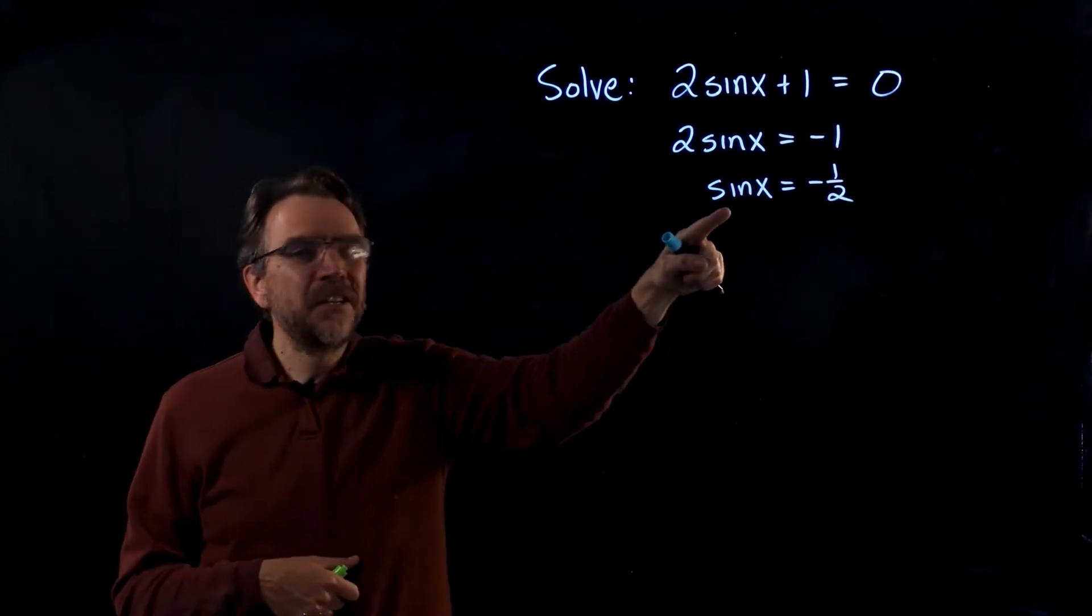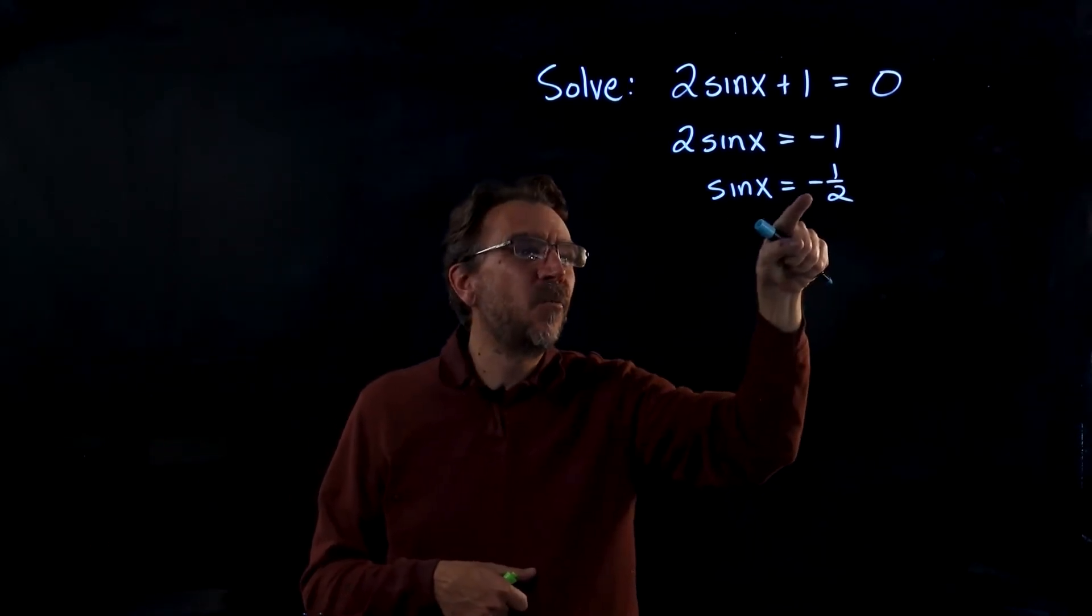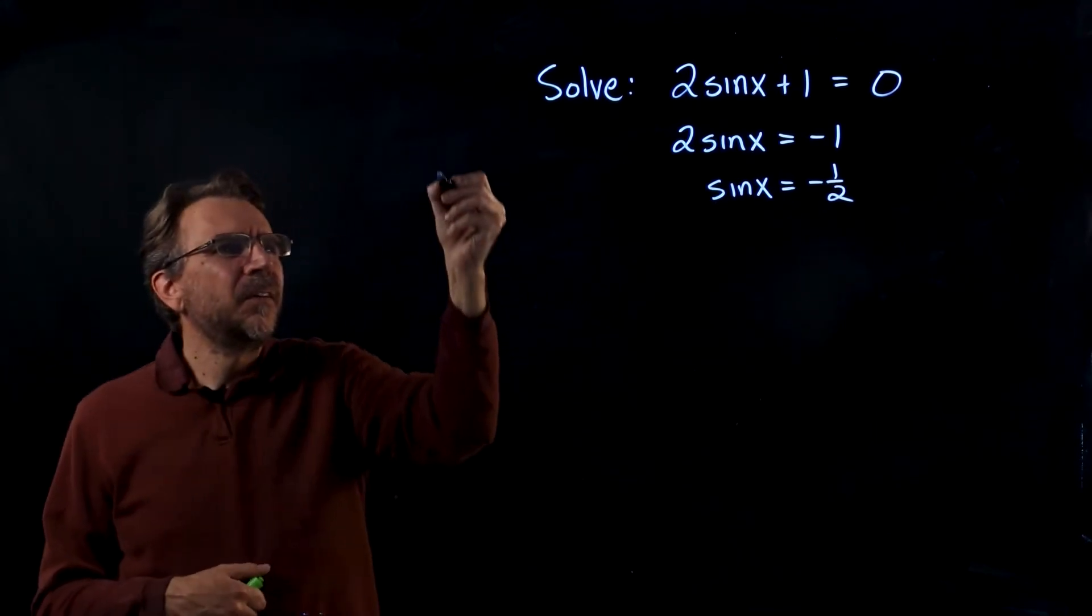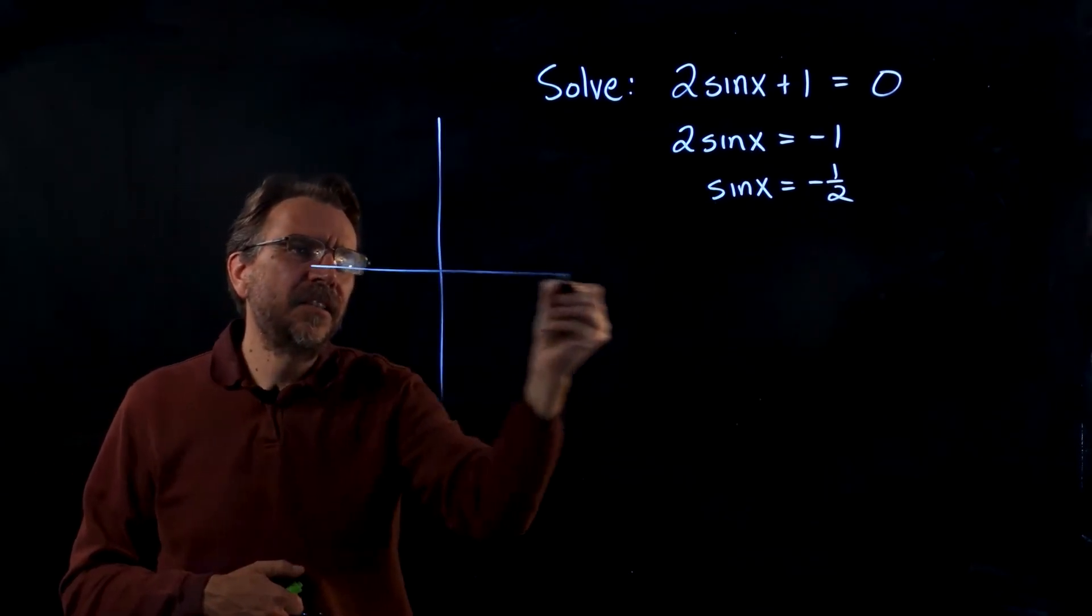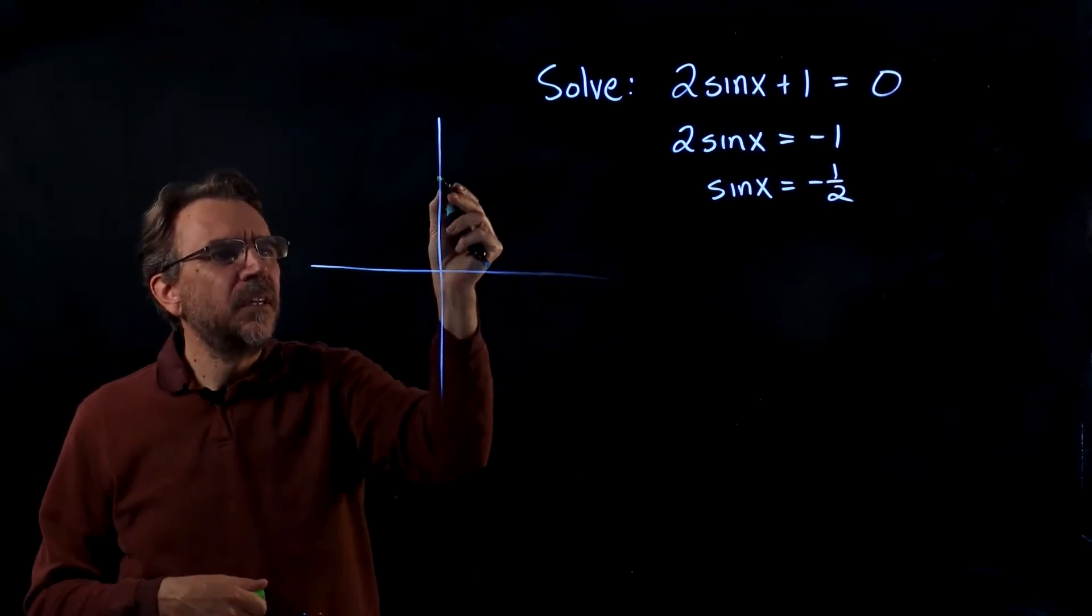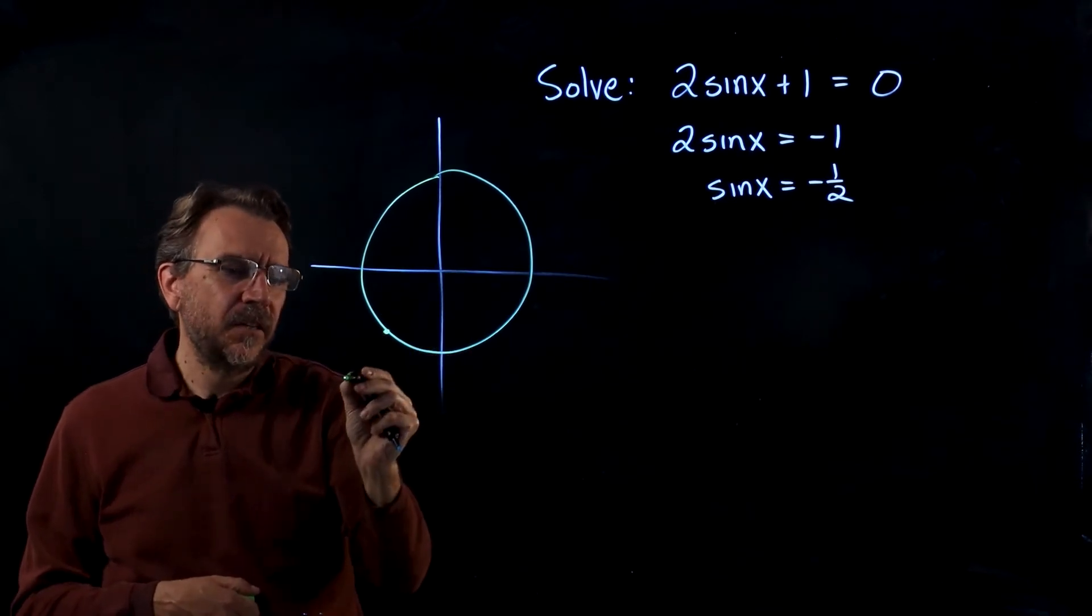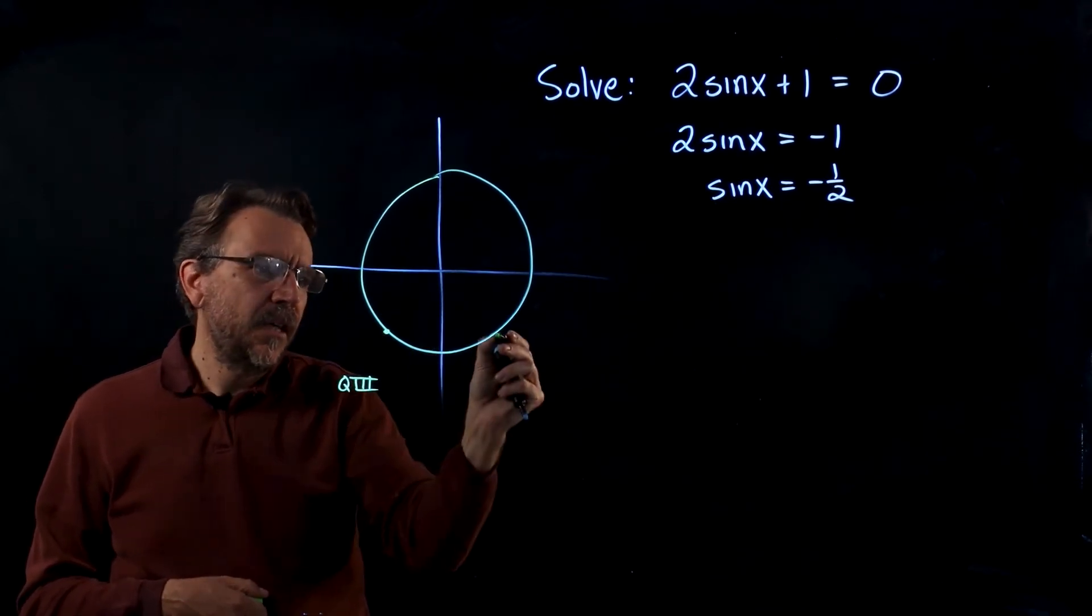Now once we get the trig function isolated, we need to figure out where is sine negative. To figure that out, let's look at the unit circle. On the unit circle, we know sine is negative over here in Q3 and Q4.